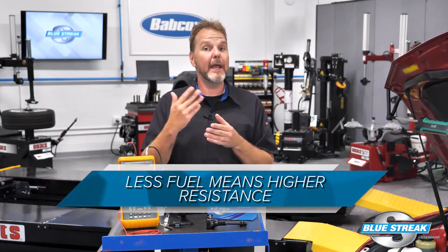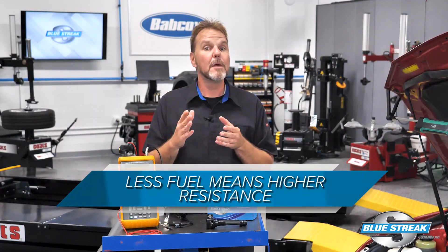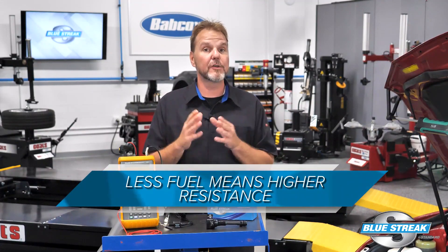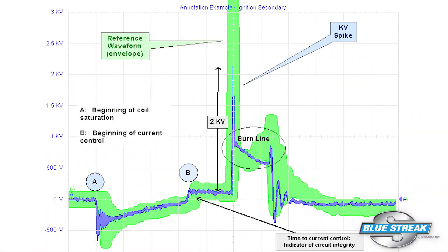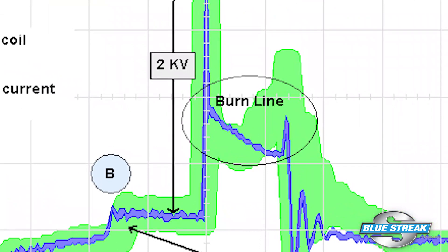Less fuel means higher resistance between the two electrodes of the spark plug. In the waveform, you can see this as the spikes change in height. Also, the burn line might be higher and shorter. But the sign that there is a lean cylinder is a spike on the end of the burn line.